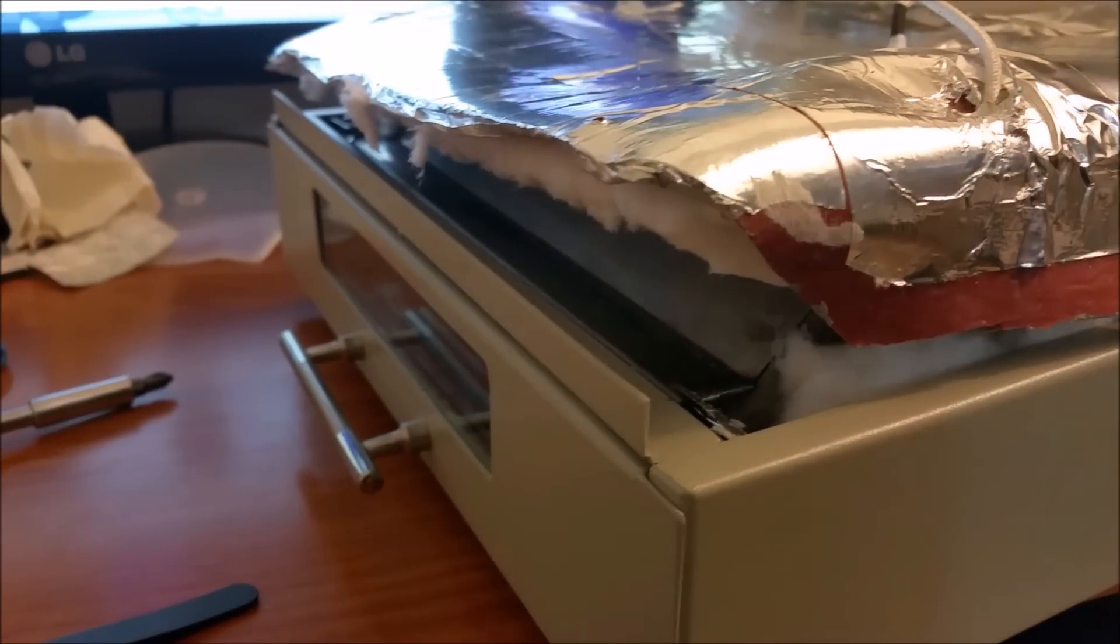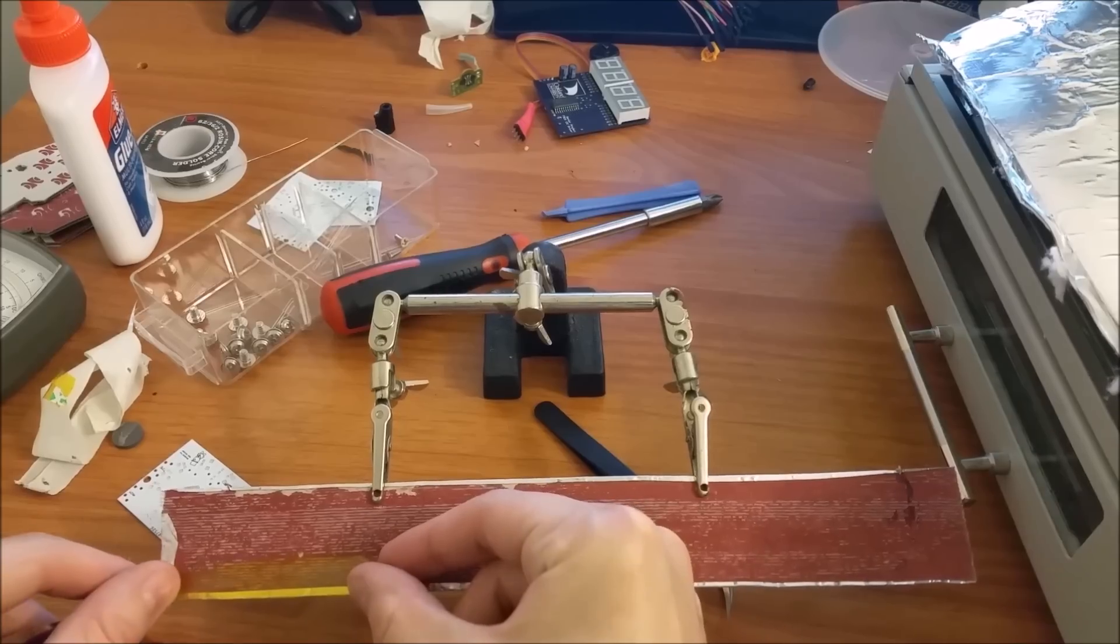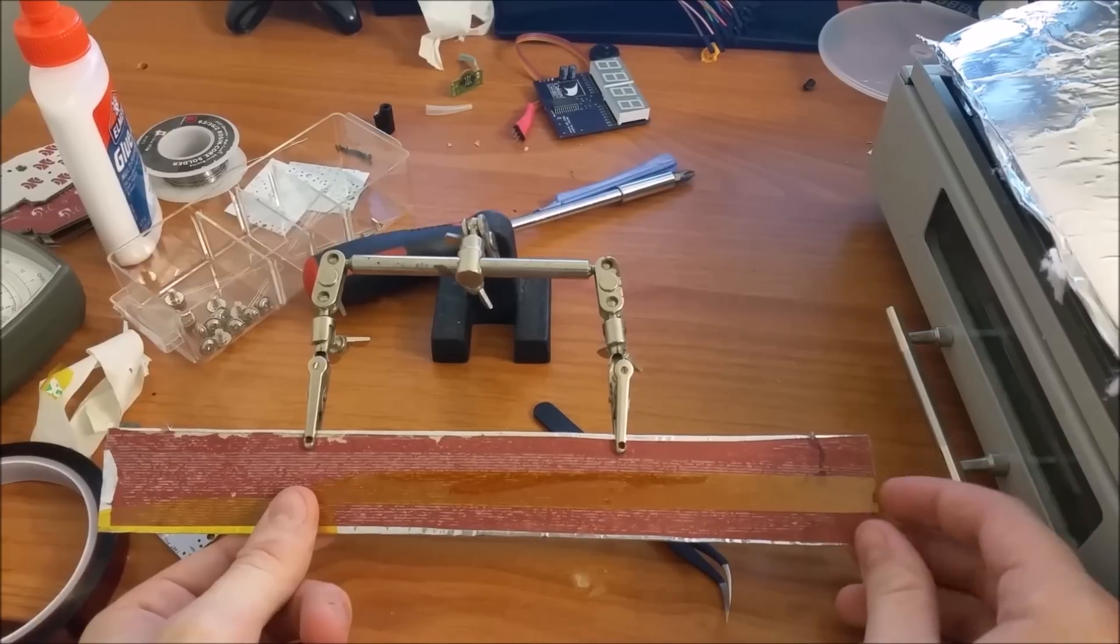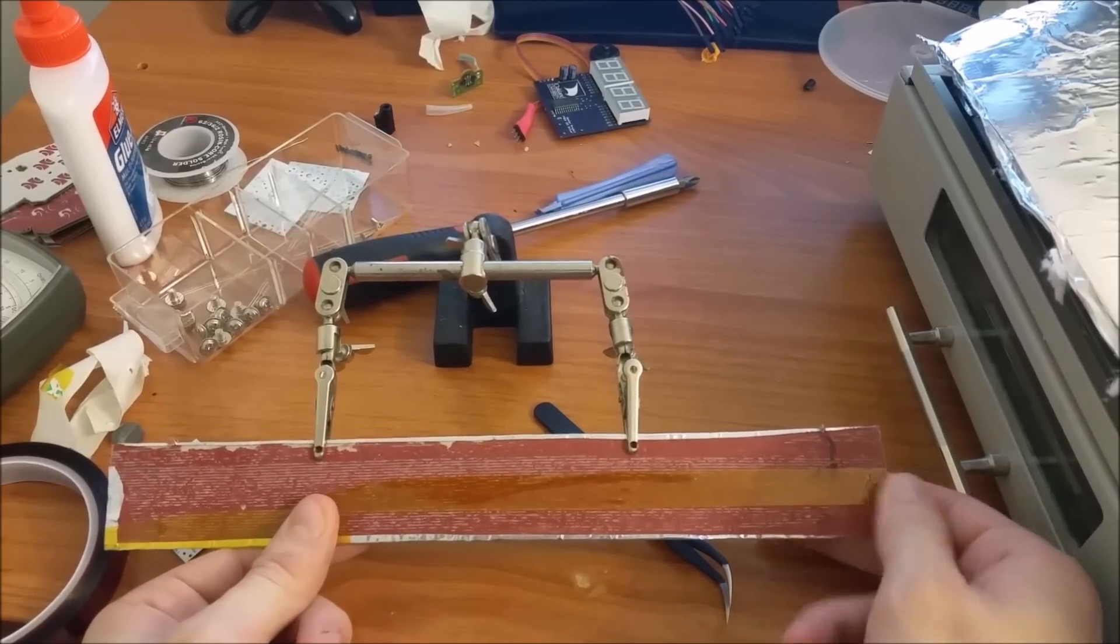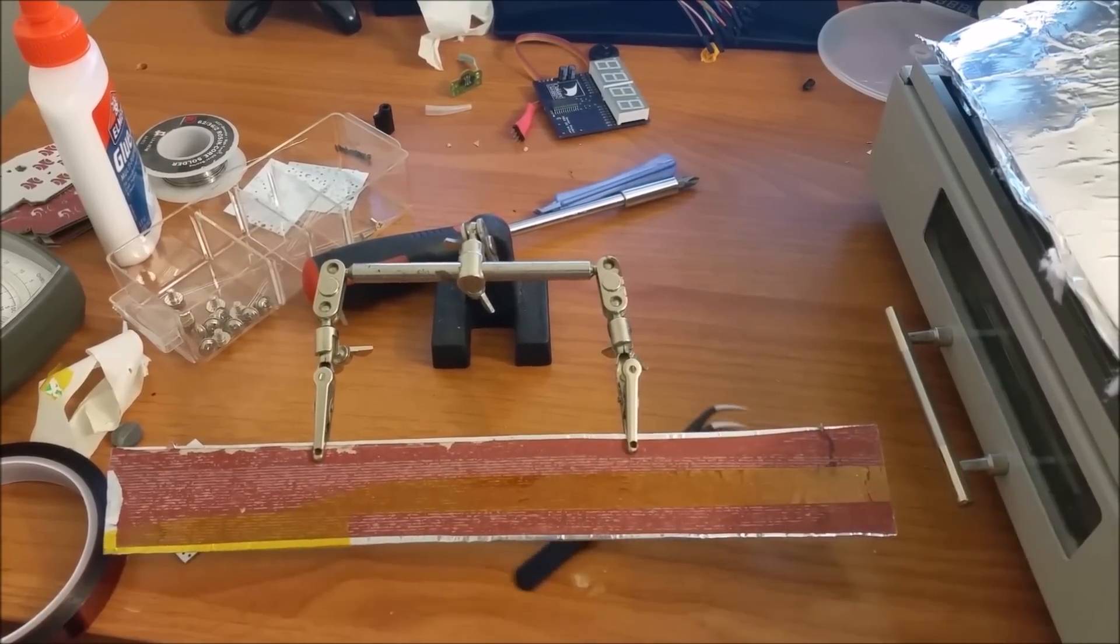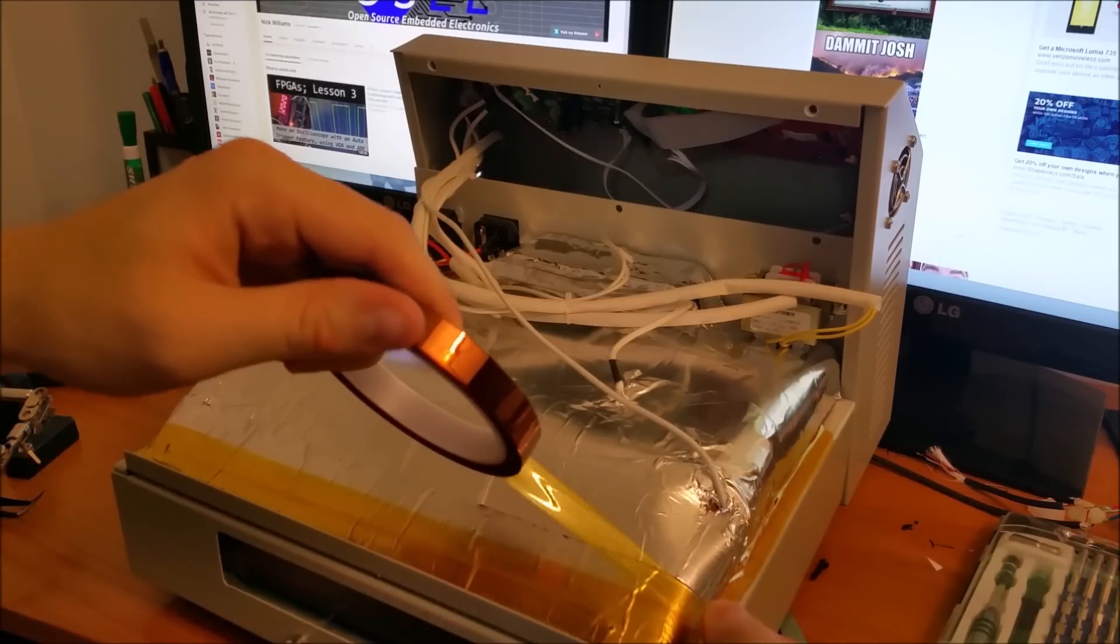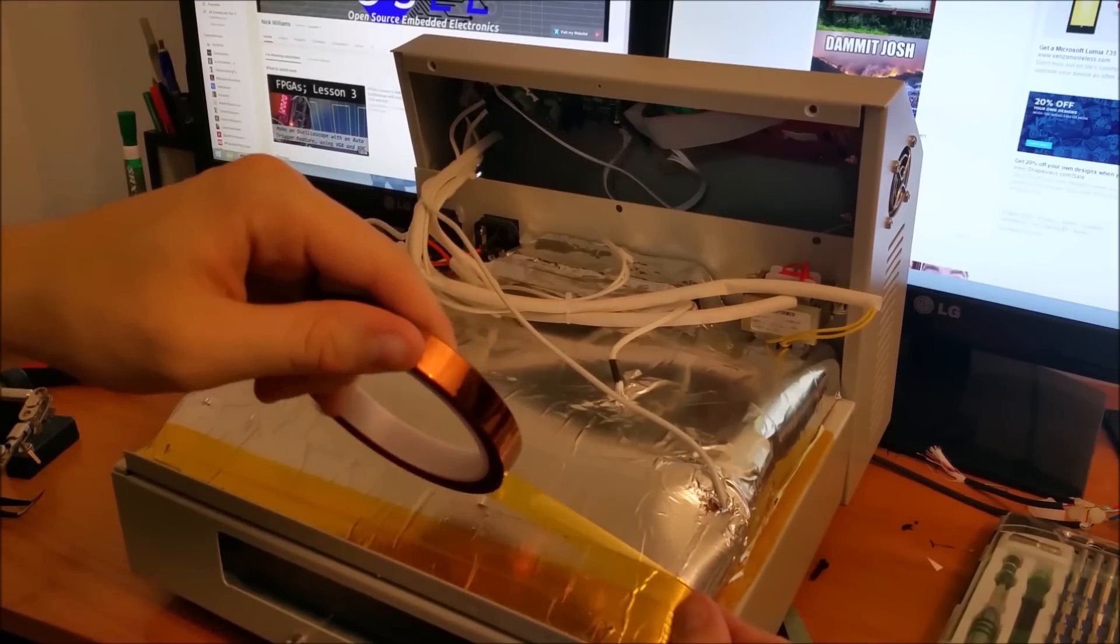Now get started with the Kapton tape. Start covering the sections of the oven with the Kapton tape in the same manner the masking tape was formally placed. Start with the flimsy bookmark and place it back in its appropriate spot. Then start taping the metal sheet and the edges to seal it in place.